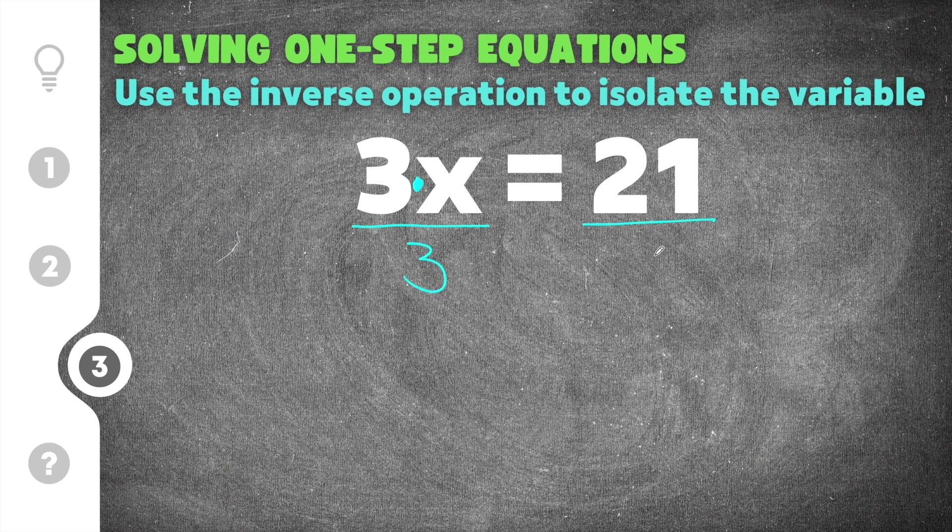Whatever you do to one side you do to the other. So I'm going to divide by 3 on this side. These will cancel. So times 3 and divide by 3 cancel. We have just x left over. And then 21 divided by 3 is 7. So now we have x equals 7.